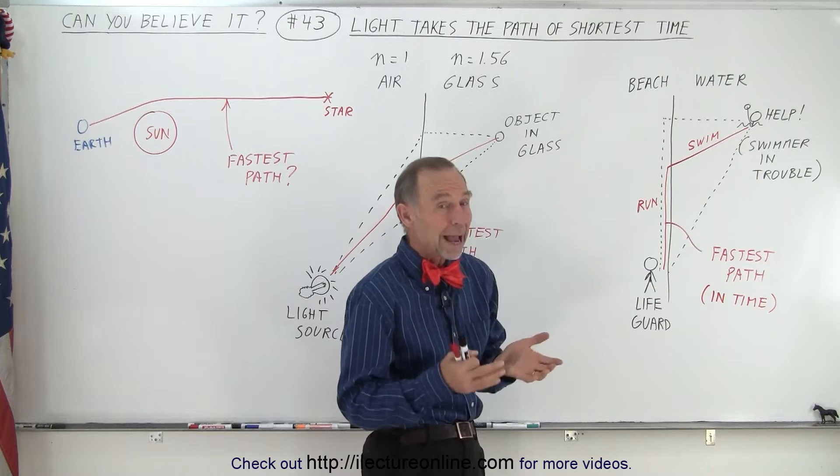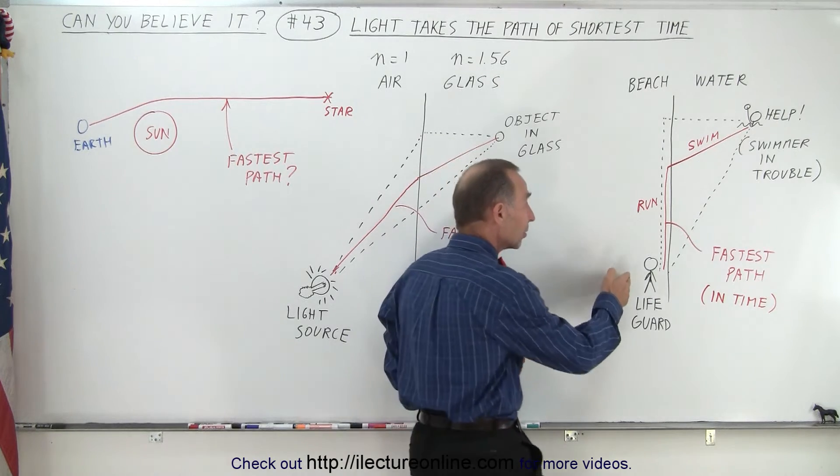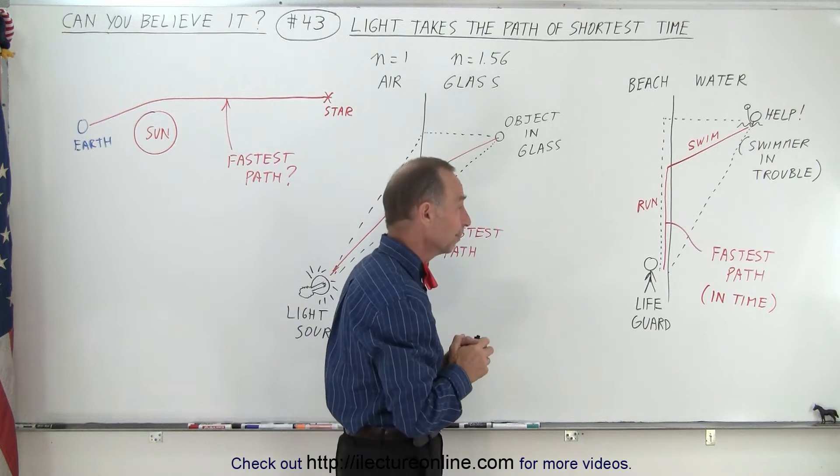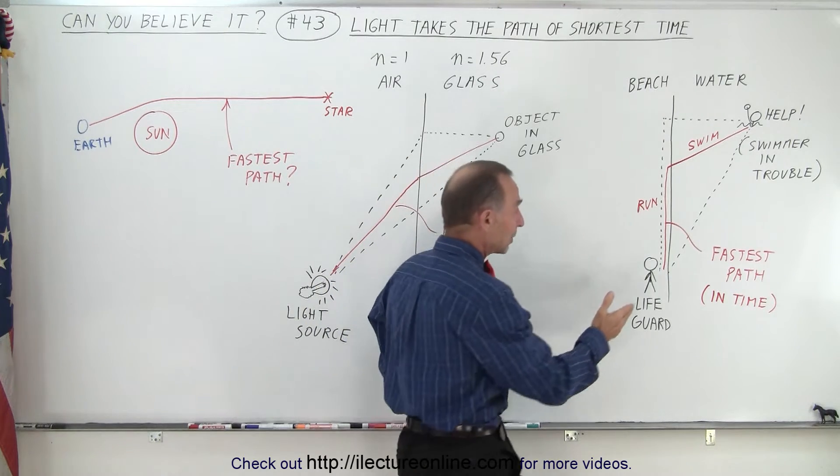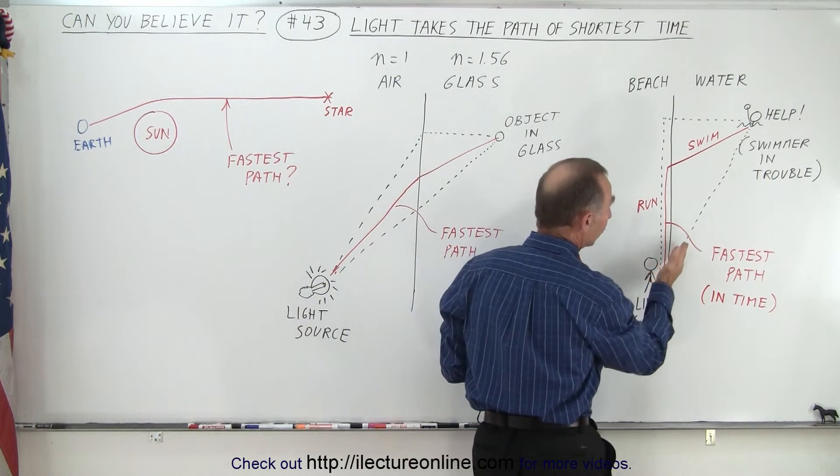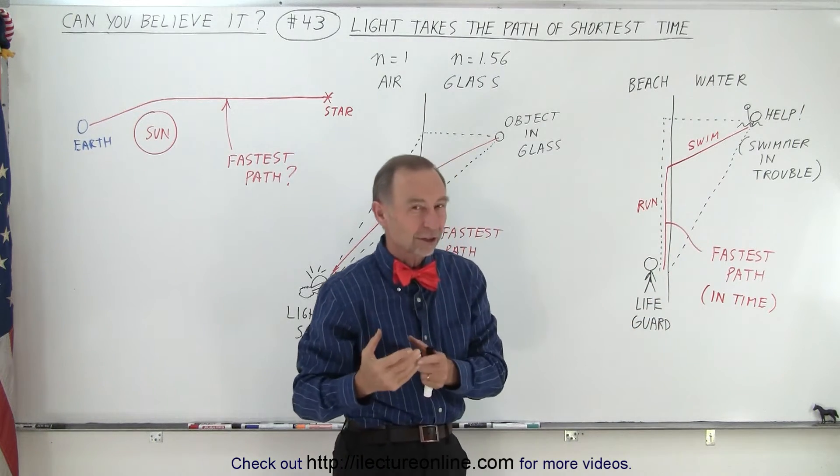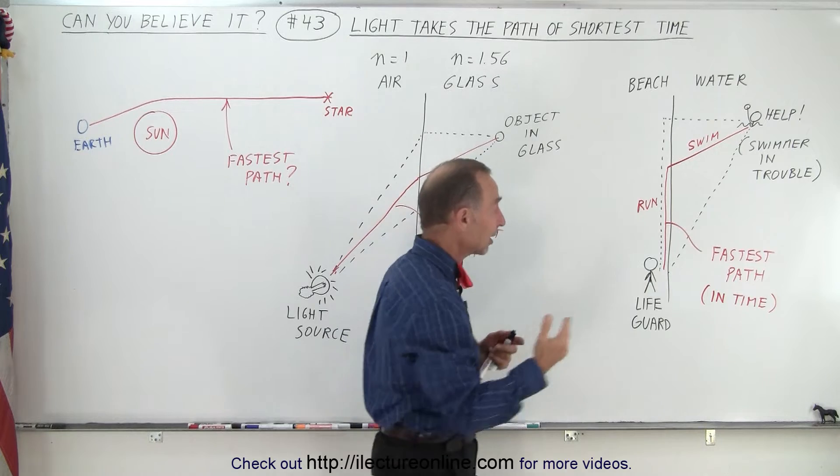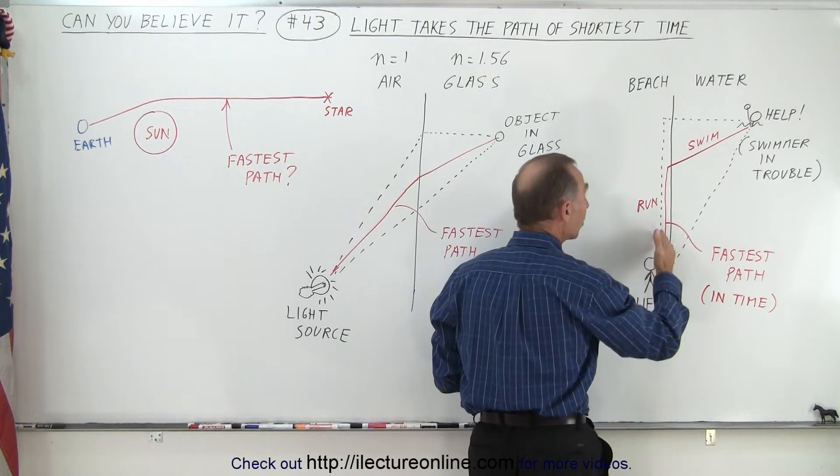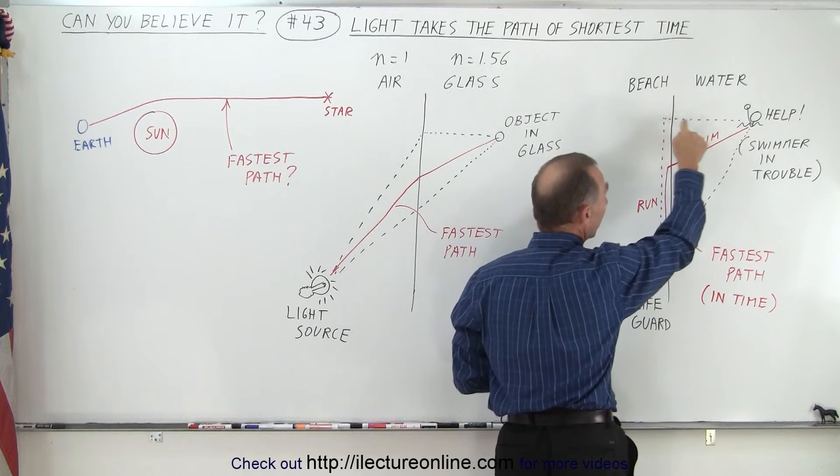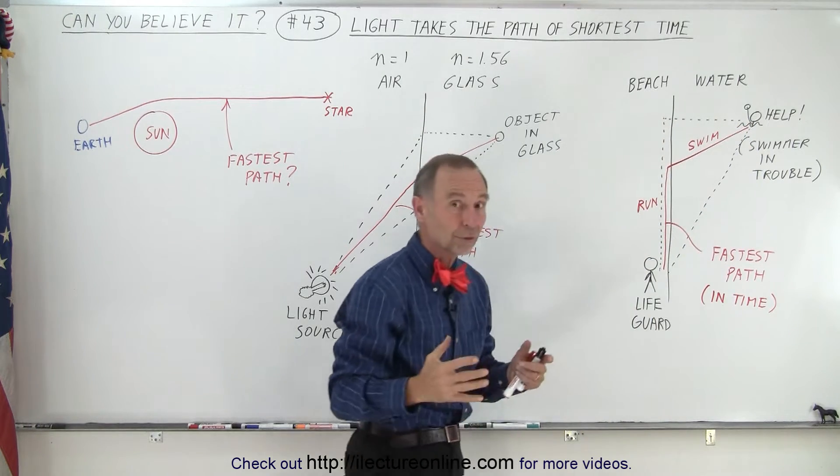Now, there are different paths in which the lifeguard can make it to the swimmer, but obviously the lifeguard wants to get there as fast as possible. So the shortest path would be directly jump in the water and swim along this path, but of course a lifeguard can't swim as fast as a lifeguard can run. So perhaps the lifeguard should run along the beach until he gets to the point directly across from where the swimmer is, then jump in the water and swim to the person who is in trouble.